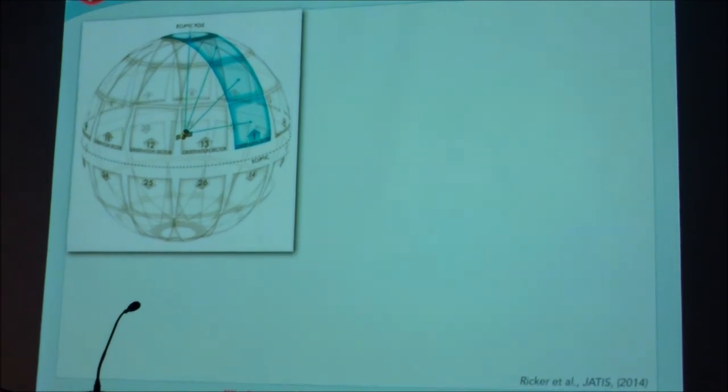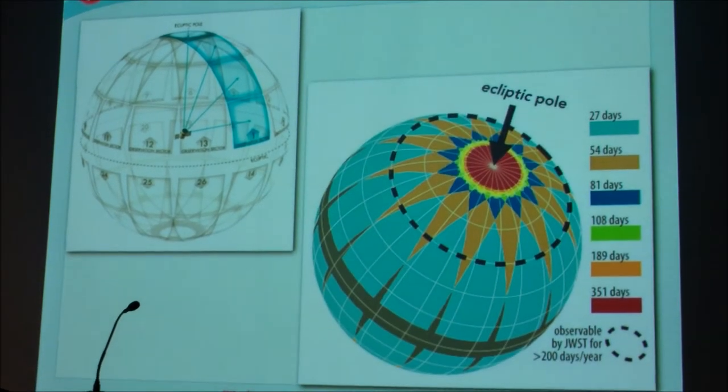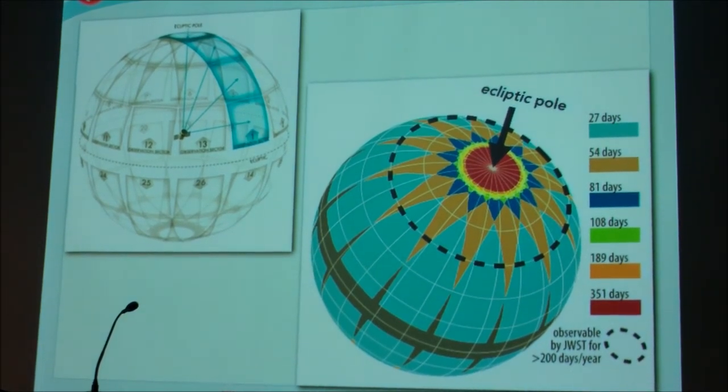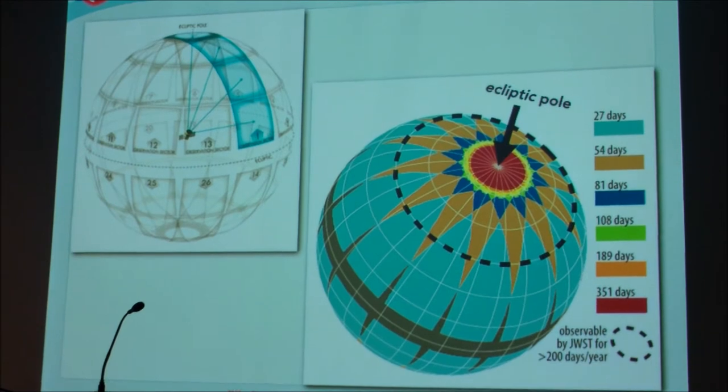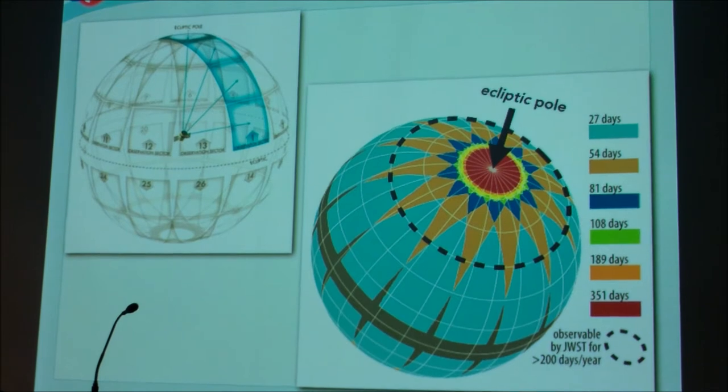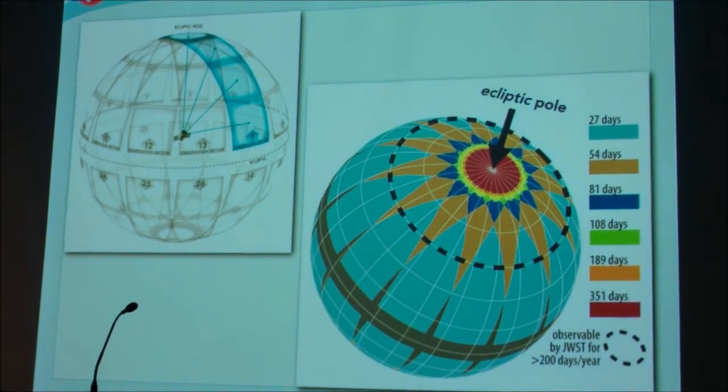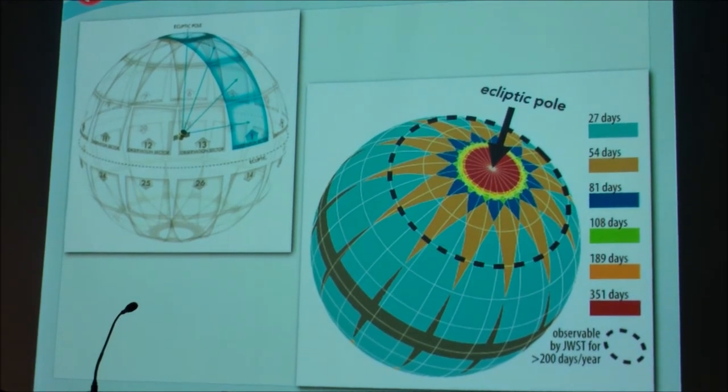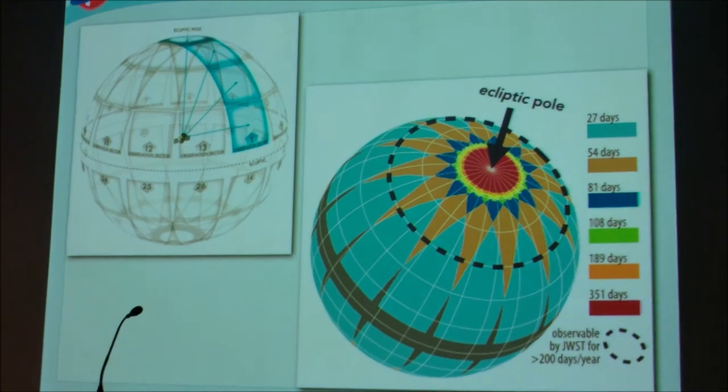So then, when the survey is underway, we're looking at these strips. There are 13 in each hemisphere that extend from near the ecliptic up to the ecliptic pole. So they're 24 degrees wide by 96 degrees high. And then at the completion of the survey, we end up with a region that has exposures of almost a year in the poles. And the region, as shown in this black line, are actually those portions of the celestial hemisphere, one in the north and one in the south, that are observable by JWST for 22 days per year.